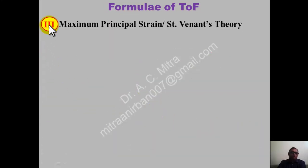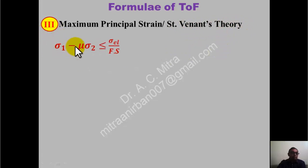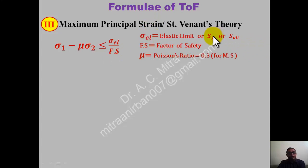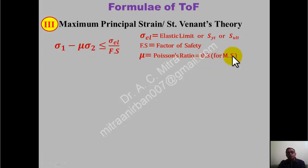The third theory is the Maximum Principal Strain theory, or St. Venant's theory. According to this: sigma 1 minus mu × sigma 2 ≤ sigma_EL / Fs. Sigma_EL / Fs is also called the allowable stress. Mu is the Poisson's ratio — a new term introduced here. If not given in the problem, assume mu = 0.3 (for mild steel).